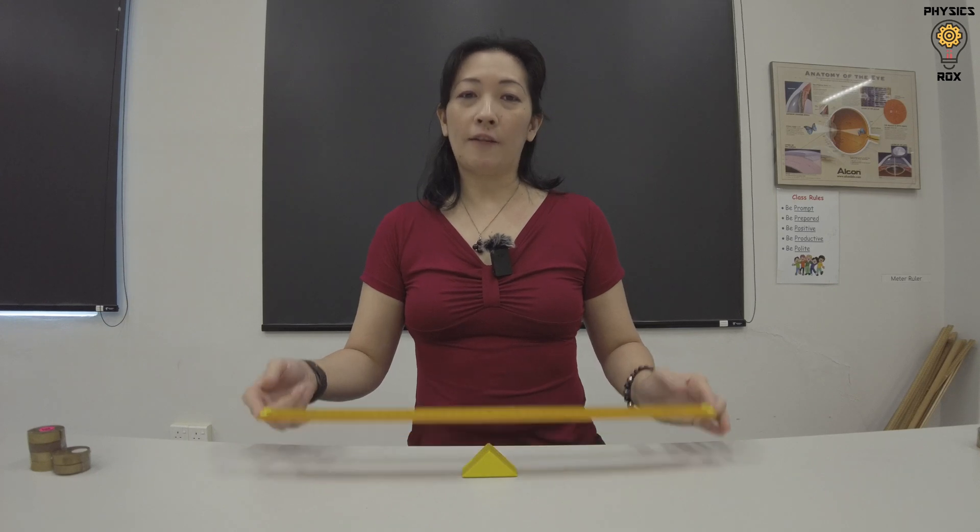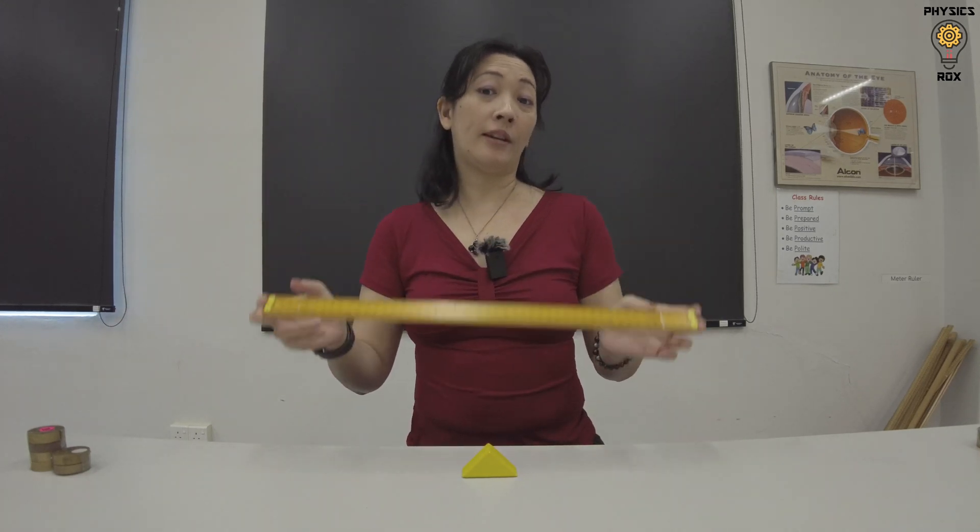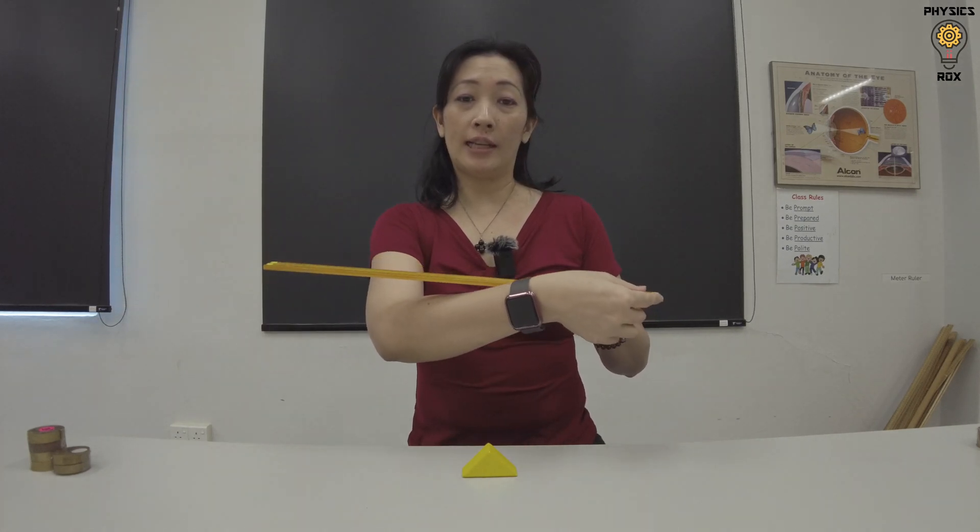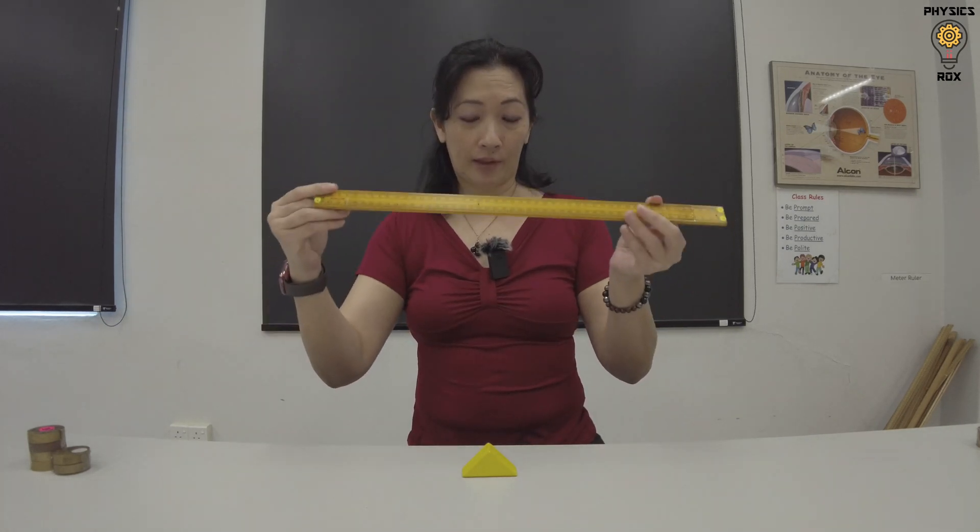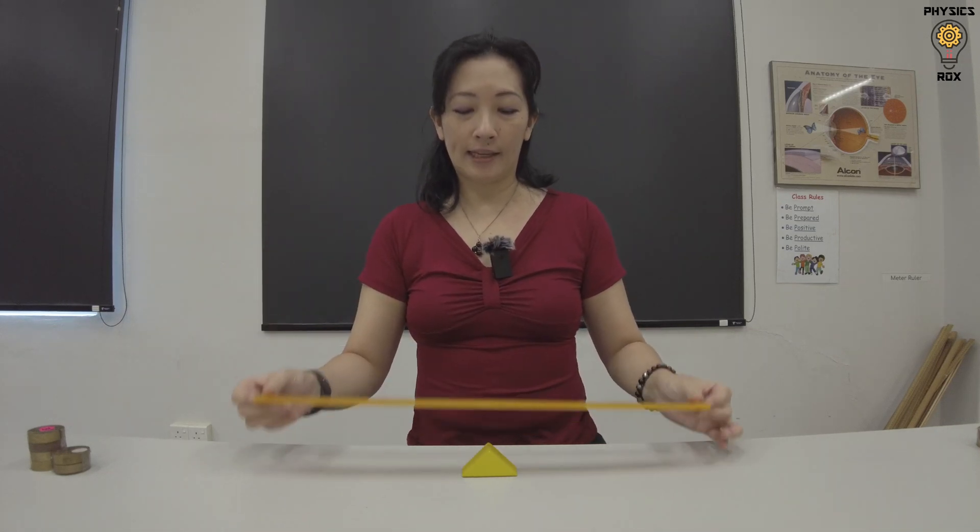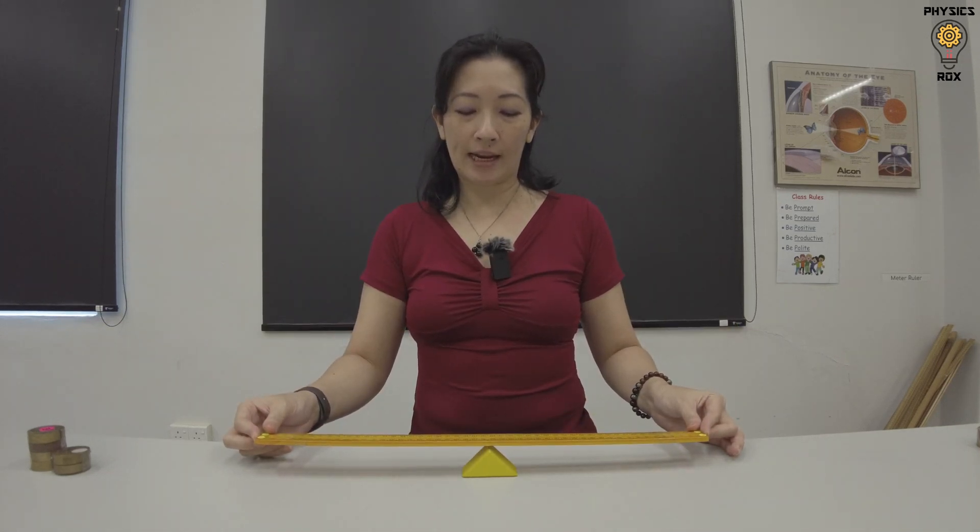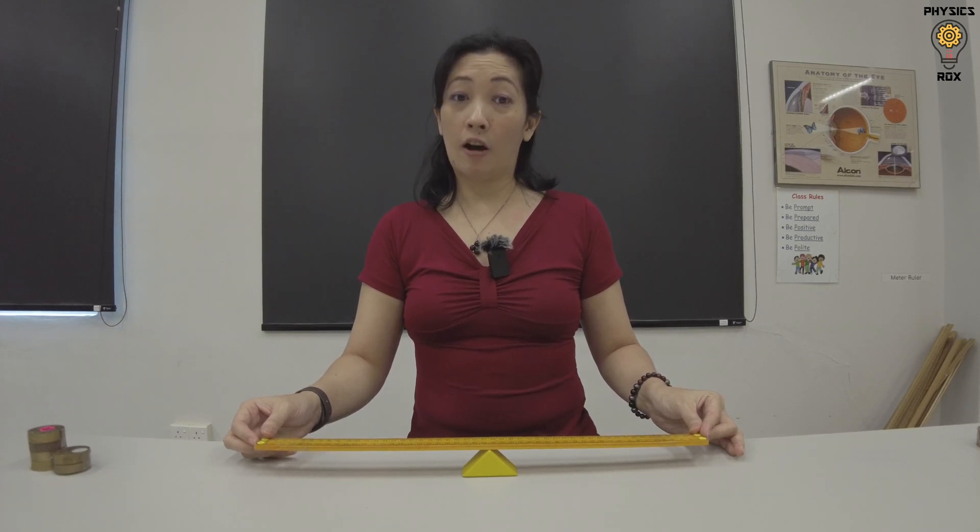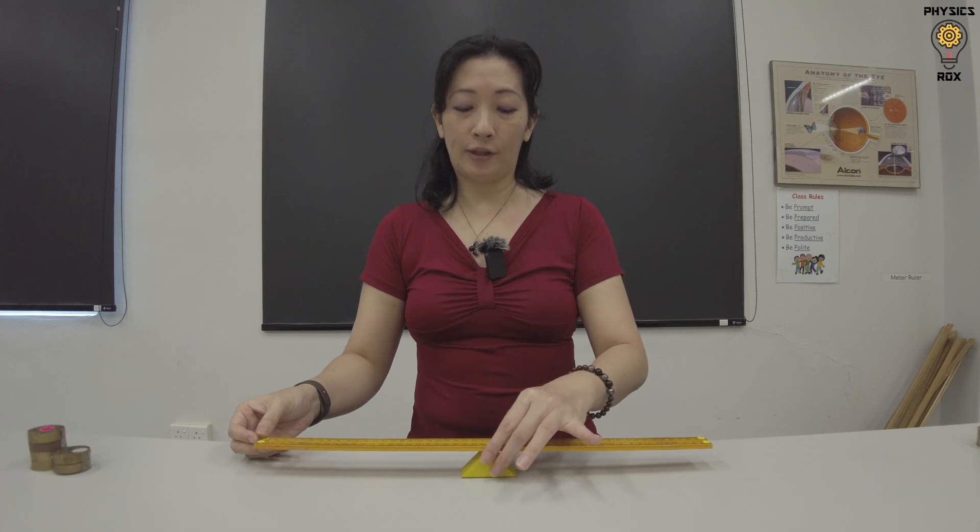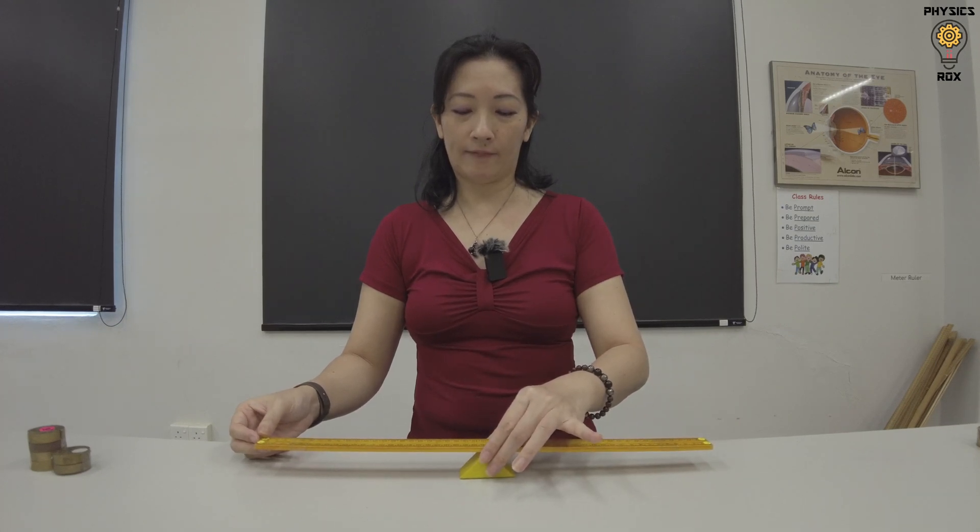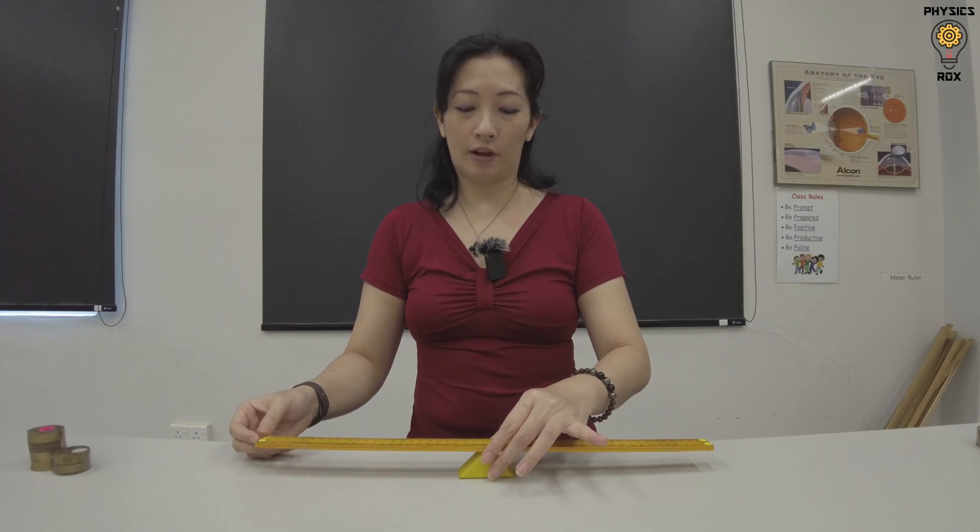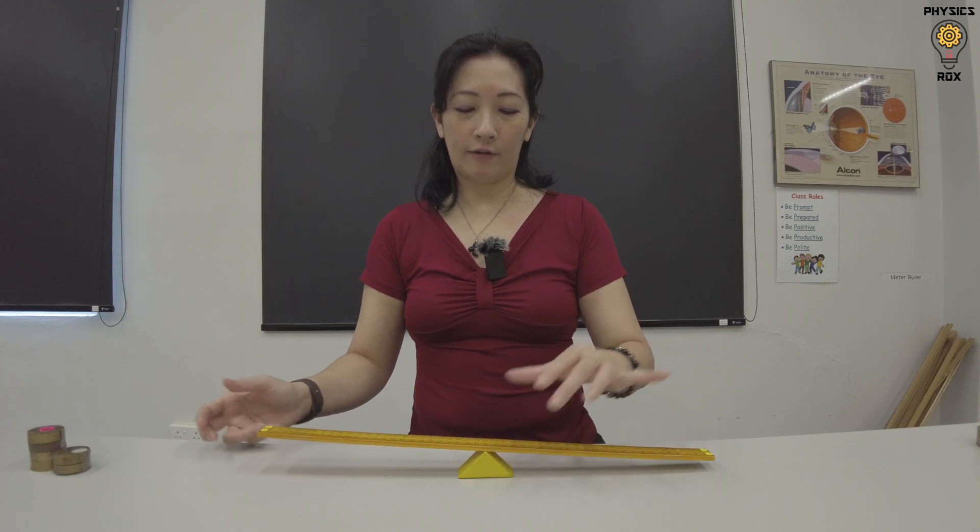Now, if the half meter rule or the meter rule that you use is uniform, meaning that the weight distribution is equal and uniform throughout the rule, if you place the half meter rule or the meter rule exactly in the middle where the center of mass is, you'll find that it should be able to balance perfectly. Which means that for this particular meter rule, because it's 50 centimeters long, if you place it at the 25 centimeter mark, you'll find that it should be balanced.